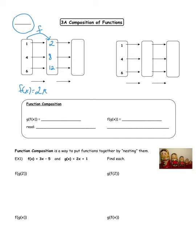Now I'm going to apply a second function, and this function I'm going to call function g. In this function, I'm going to take these inputs — which were my original outputs, the 2, 8, and 12 — those are going to be my inputs for g, and I'm going to do something to them. Their outputs are 5, 11, and 15. That's the function g. If you said that g of x is the function that takes your input value and adds 3, you would be correct.